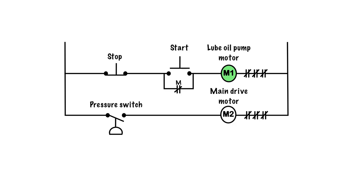When the pressure switch engages, then M2, the main drive motor, will run. As long as M1 is running and maintaining pressure, the pressure switch will stay closed and then the main drive motor can run.